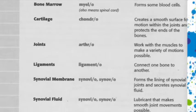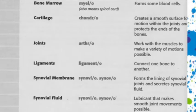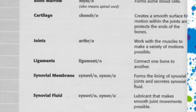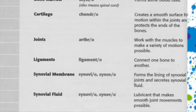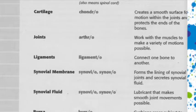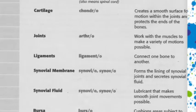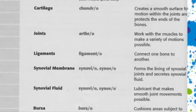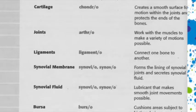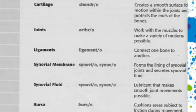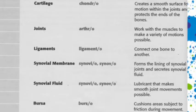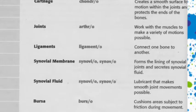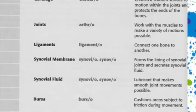Ligaments connect one bone to another, and the word root for ligament is ligament, ligamento. The synovial membrane forms the lining of synovial joints and secretes synovial fluid. The word root for synovial membrane is synovi, synovio, synov, or synovo.